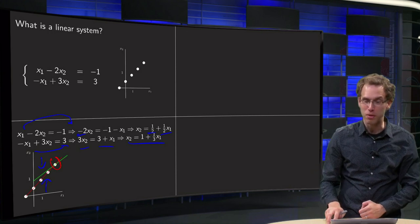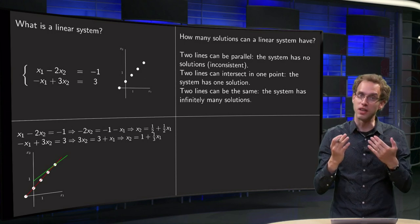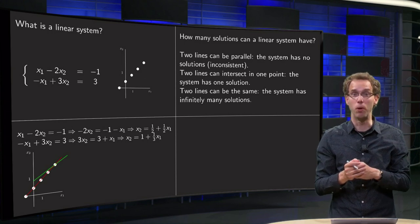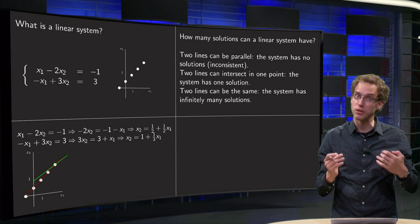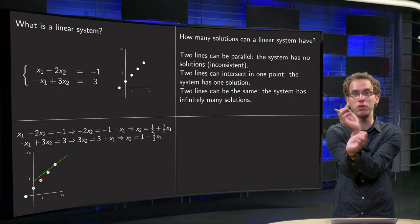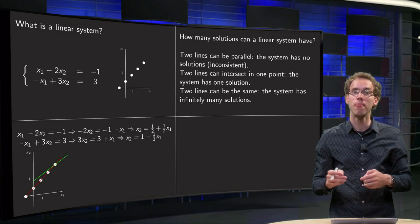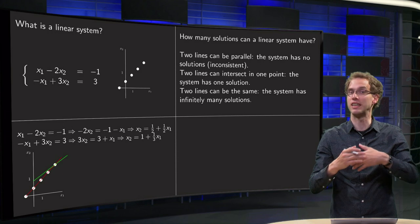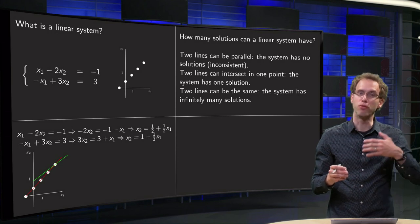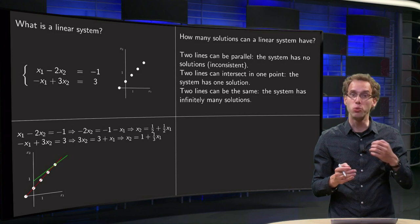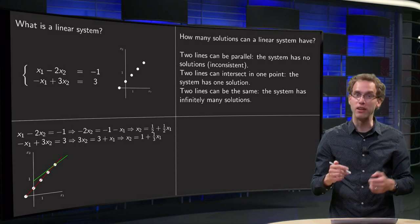This tells us something about the number of solutions a linear system can have. Two lines can intersect, meaning the system has exactly one solution. Two lines can be parallel, and in that case there are no points of intersection, so the linear system has no solutions. Or the lines can happen to be the same — on top of each other — giving an infinite number of intersection points and therefore infinitely many solutions. Notice that two lines can never intersect at exactly two points, so a linear system can never have exactly two solutions. This holds for any number of linear equations with any number of unknowns.